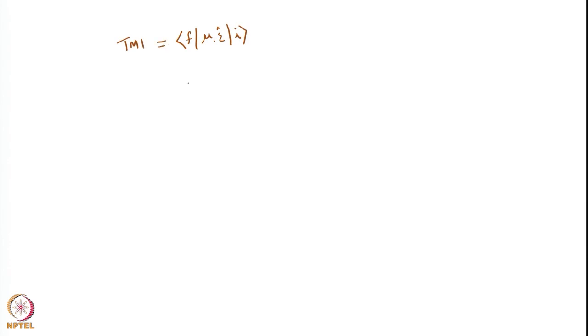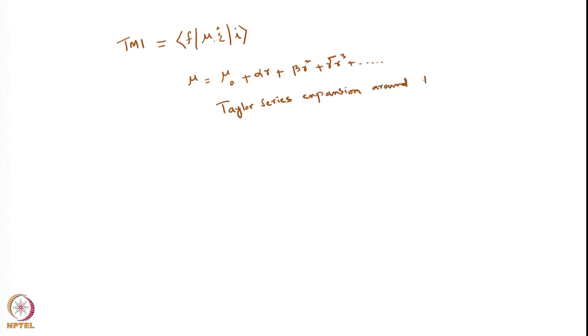Towards the end of the last lecture, we were looking at the transition moment integral. We wrote μ as a Taylor series expansion around the equilibrium geometry: μ = μ₀ + αr + βr² + γr³ + etc.